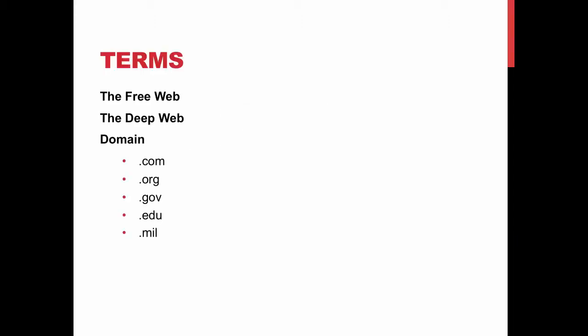Remember, less than 1% of everything on the web is found in Google. When we talk about the free web, that's what we're referring to — that 1%. The deep web refers to everything else: everything that's locked behind passwords, search boxes — all those things are part of the deep web.